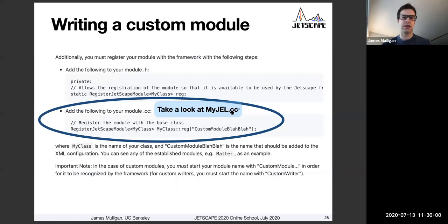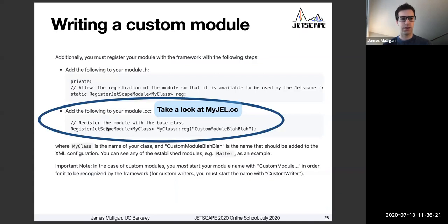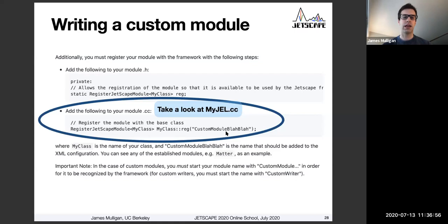There's a second thing in the .cc file — one other change one needs to make. I'd ask you to take a look into the myjel.cc file. Towards the top, you should see a line where the comment says 'register the module with the base class,' and then there is this syntax that says 'register Jetscape module my class.' That would be substituted with 'my jel,' which is the name of our class. There is also a thing that says 'my class reg' and then a name in quote marks — 'custom module' — and this name in quotes is what we put into the XML file in order for Jetscape to run our module.